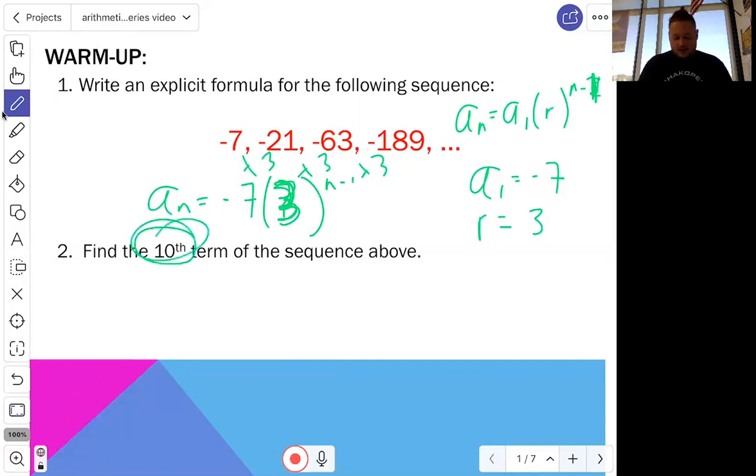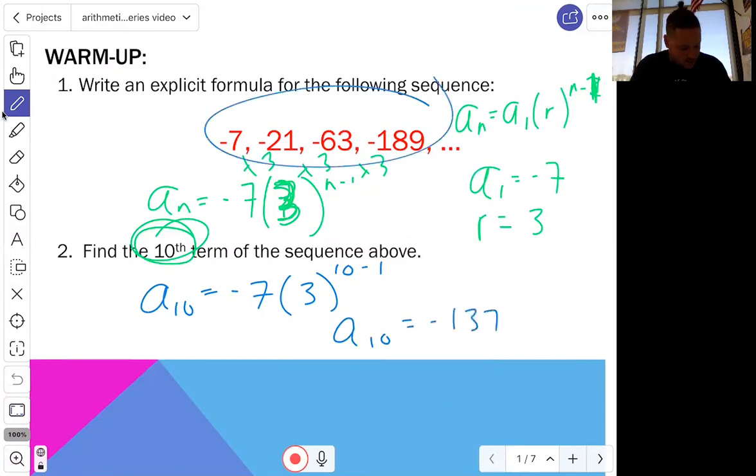And now we're going to use that formula to find the 10th term of this geometric sequence. So a10 is equal to negative 7 times 3 to the 10 minus 1. We'll go ahead and plug it in on the calculator real quick. And I'm getting this insanely big number, which makes sense because these numbers are already starting to get pretty big, of negative 137,781. So that would be the 10th term in this geometric sequence. Cool.